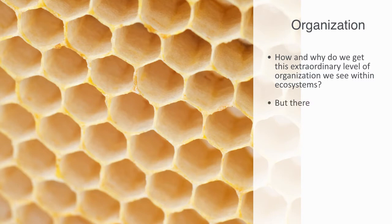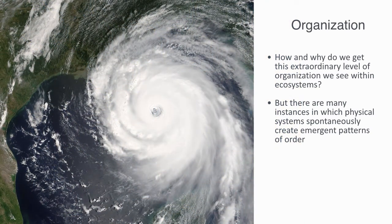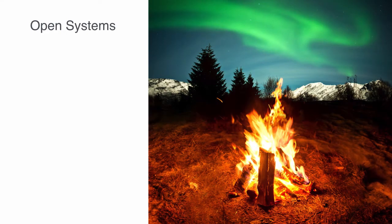But there are many instances in which physical systems spontaneously create emergent patterns of order. For example, despite the destruction that they cause, hurricanes have a very orderly vortex motion when compared to the random motion of air molecules in a closed environment. Even more spectacular is the order created by chemical systems, the most dramatic being the order associated with life of all kind. But of course, the second law only really tells us about closed systems. What we're dealing with in ecology though are in fact open systems.